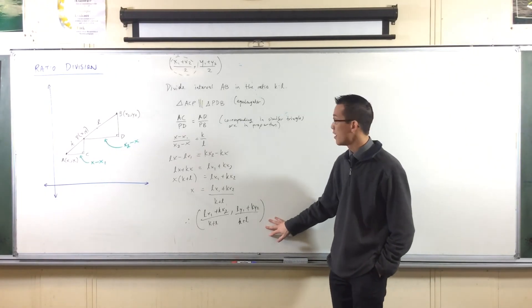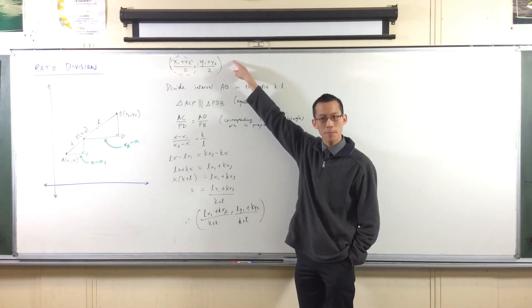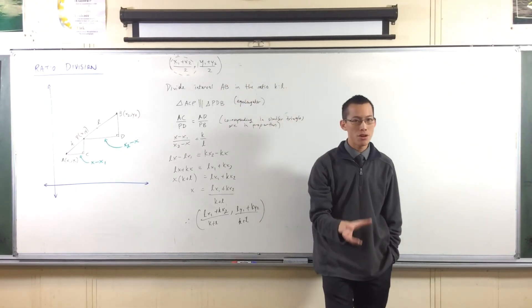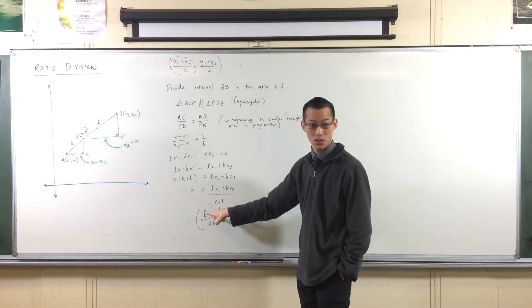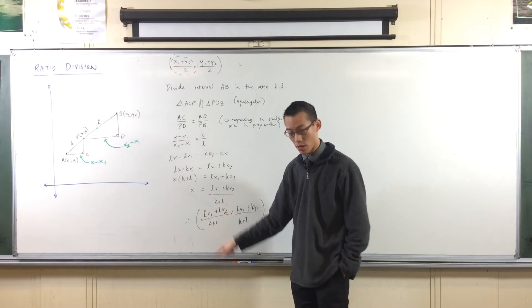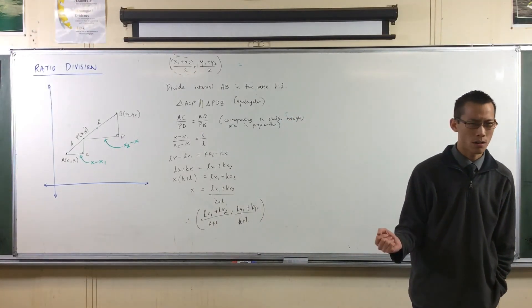So there's the formula and you can see how it makes the midpoint formula. If your ratio is one to one. This becomes x1 plus x2 and this is 1 plus 1, which is 2. And the same thing for y.